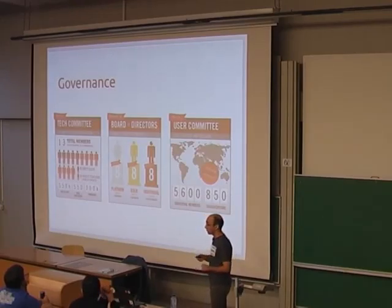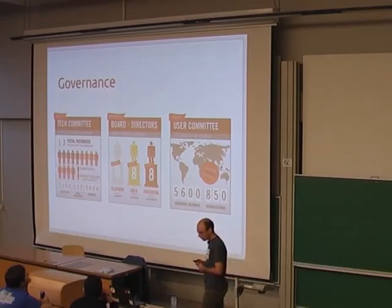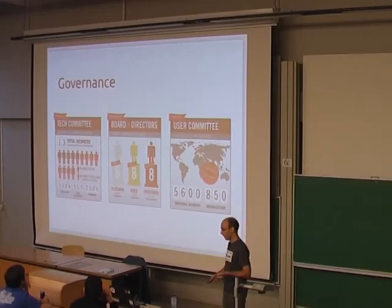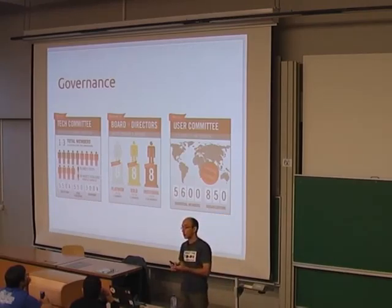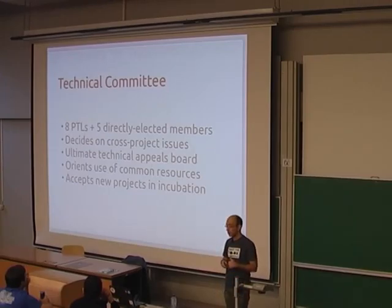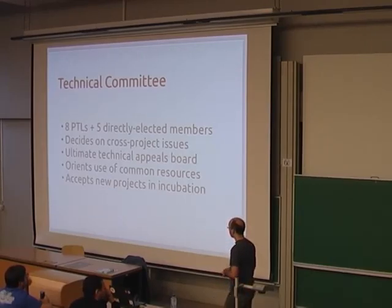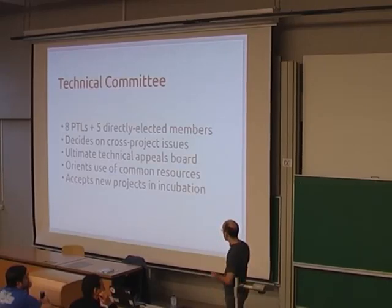We have three different bodies: the Board of Directors, which is like a foundation board tasked with protection of the trademark and empowering development; the User Committee, which represents our users so they can feed back their most pressing needs to the technical side and the board; and the Technical Committee, which is in charge of the technical direction of the project. The Technical Committee consists of all core project PTLs — project technical leads — plus five directly elected members, tasked with decisions on cross-project issues. It also serves as the ultimate technical appeals body, though it has never been used, which is probably a good thing.